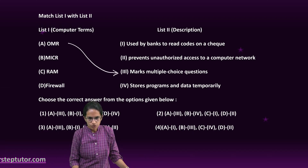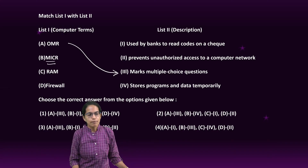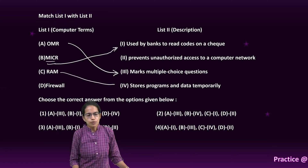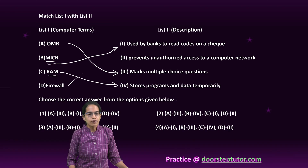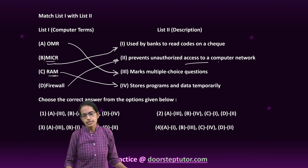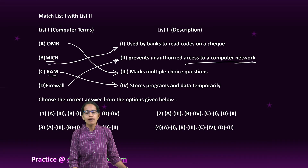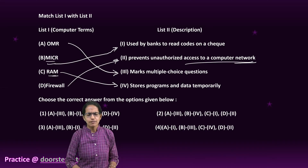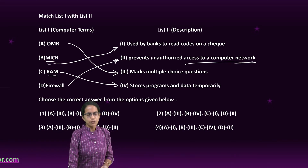OMR marks the multiple choice question — that's a correct option. MICR is used by banks to read the code on checks — that's again correct. RAM stores the program and data temporarily; it is the random access memory. And firewall prevents any unauthorized access to the network of the computer. So here we have the correct match — a very simple question asked on various computer terms.